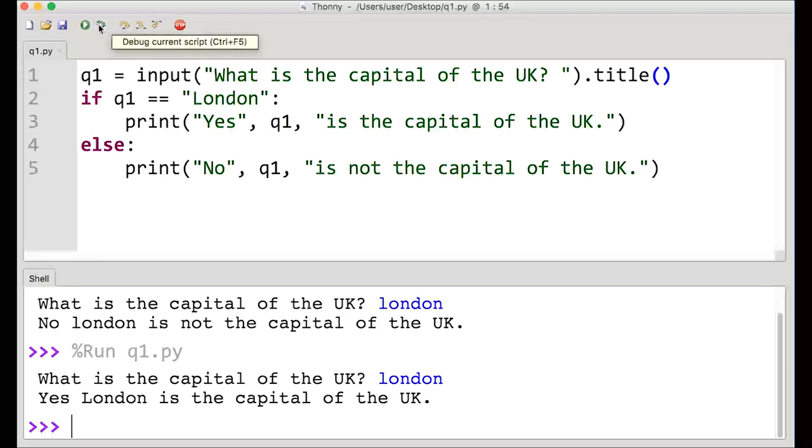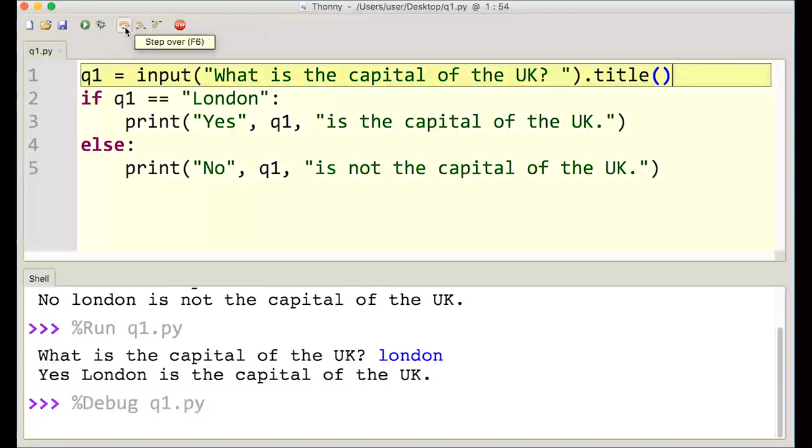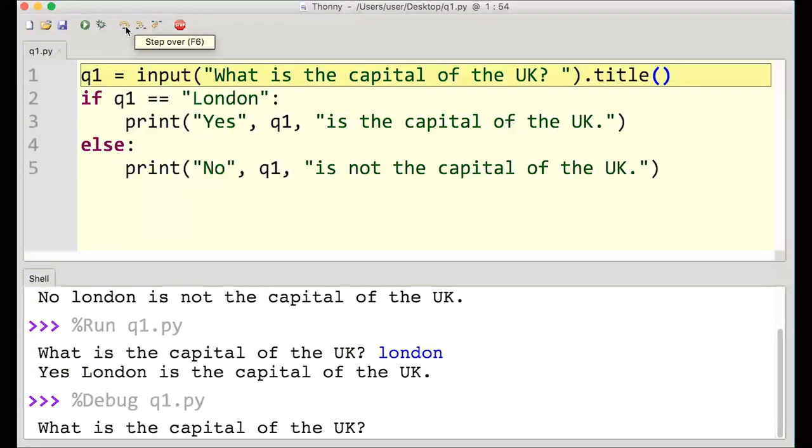So what I can show you now is one of the nice things about this program, Thonny. So you can actually see the code work line by line. So if we debug this, we can see that we're getting the first line of code is played in. So what is the capital of the UK? And I'm going to type in London again, enter.